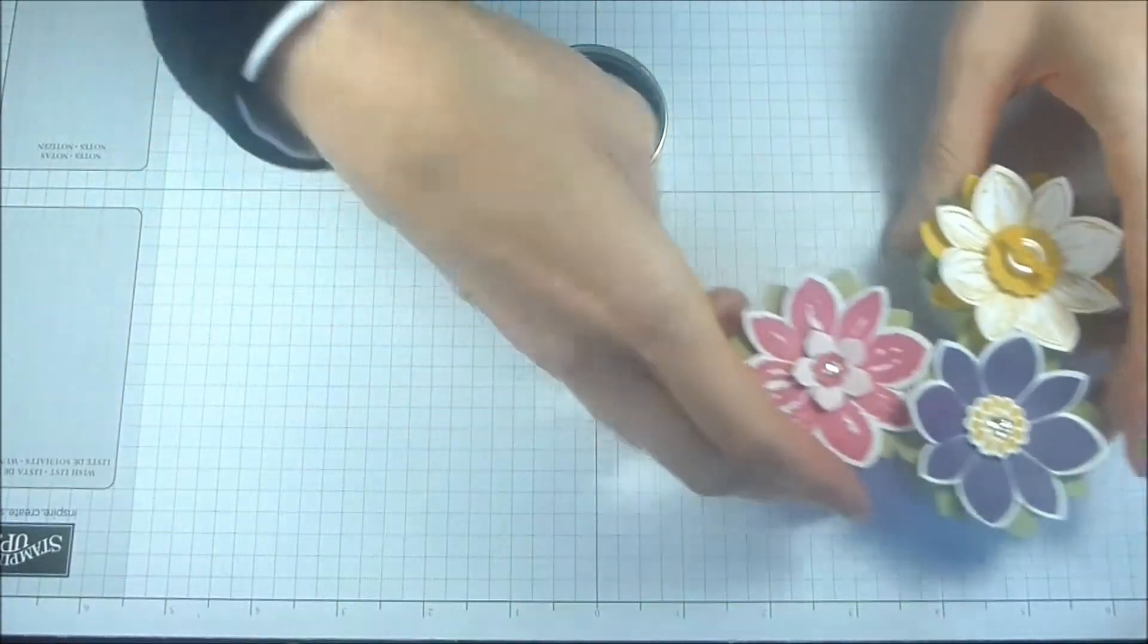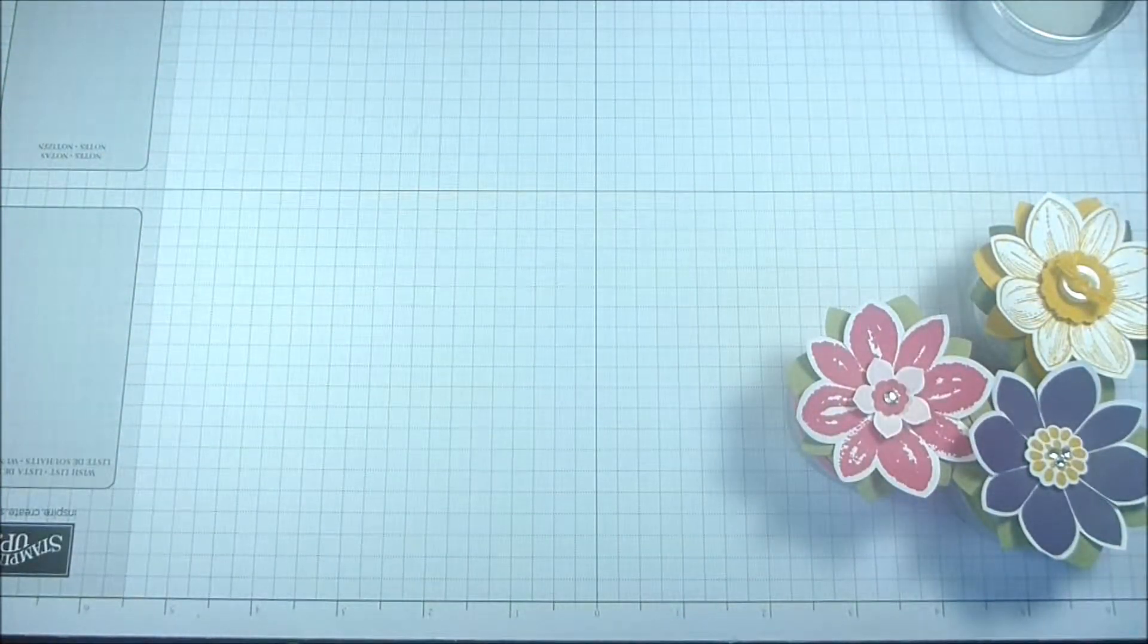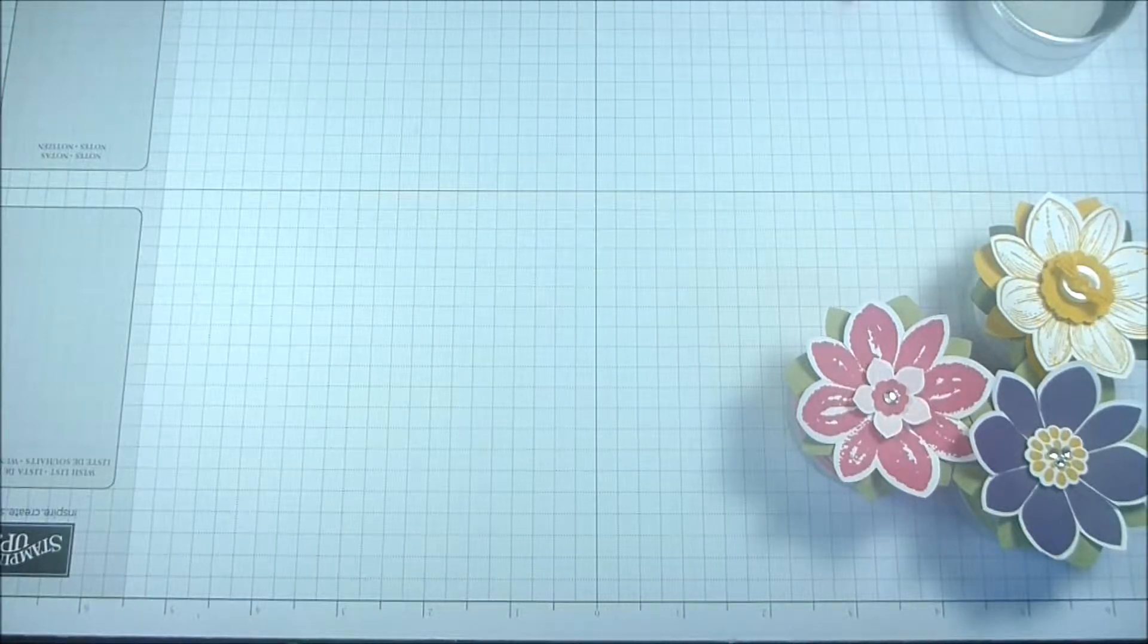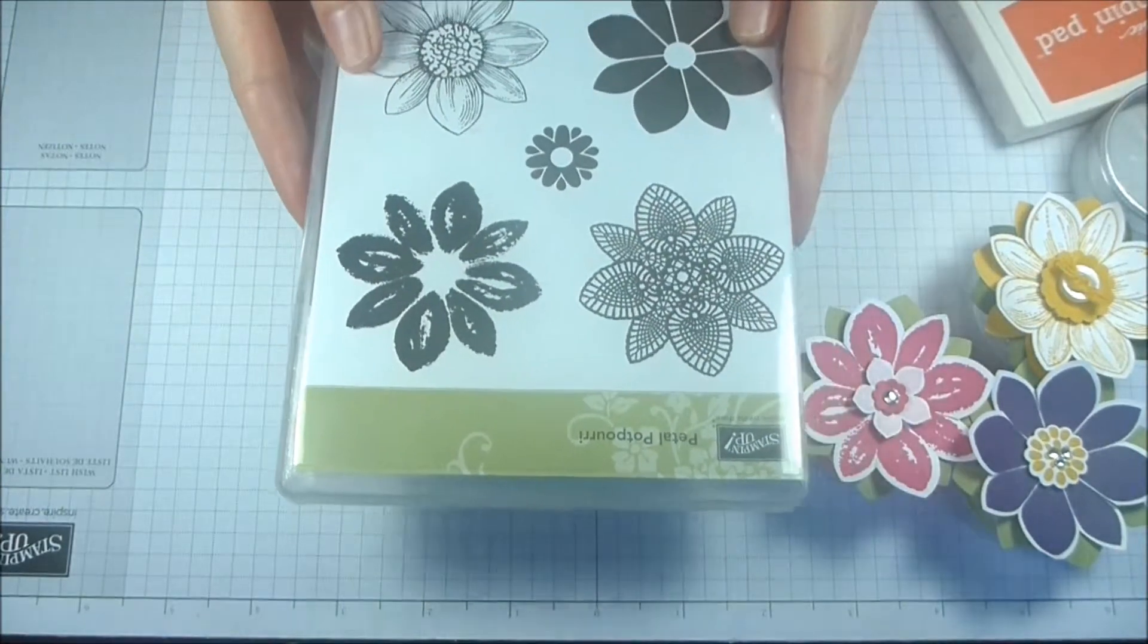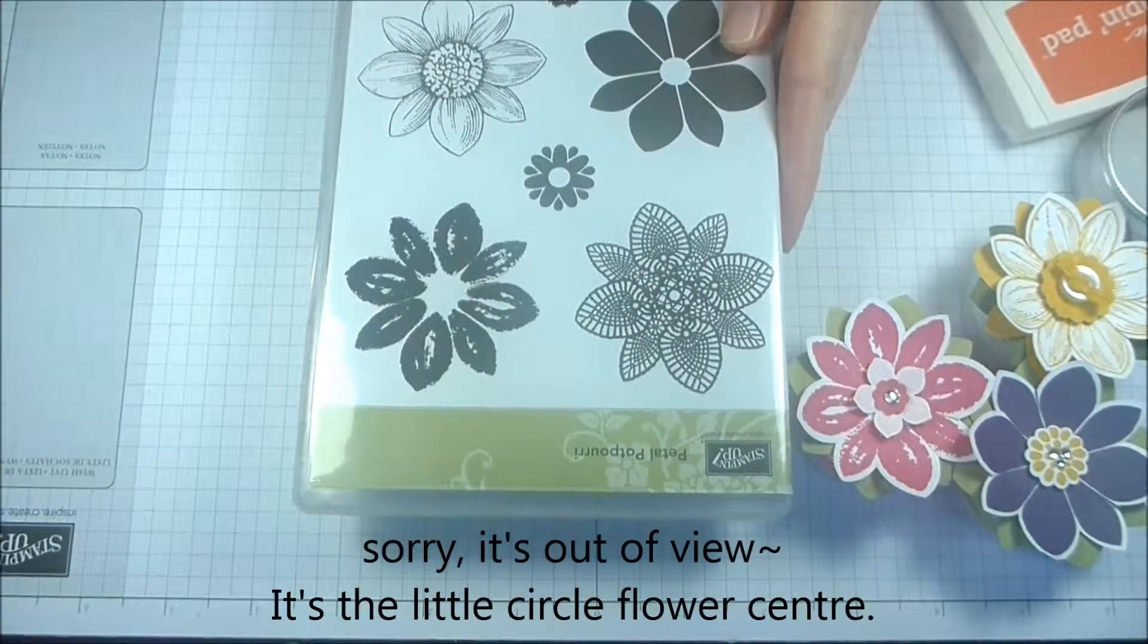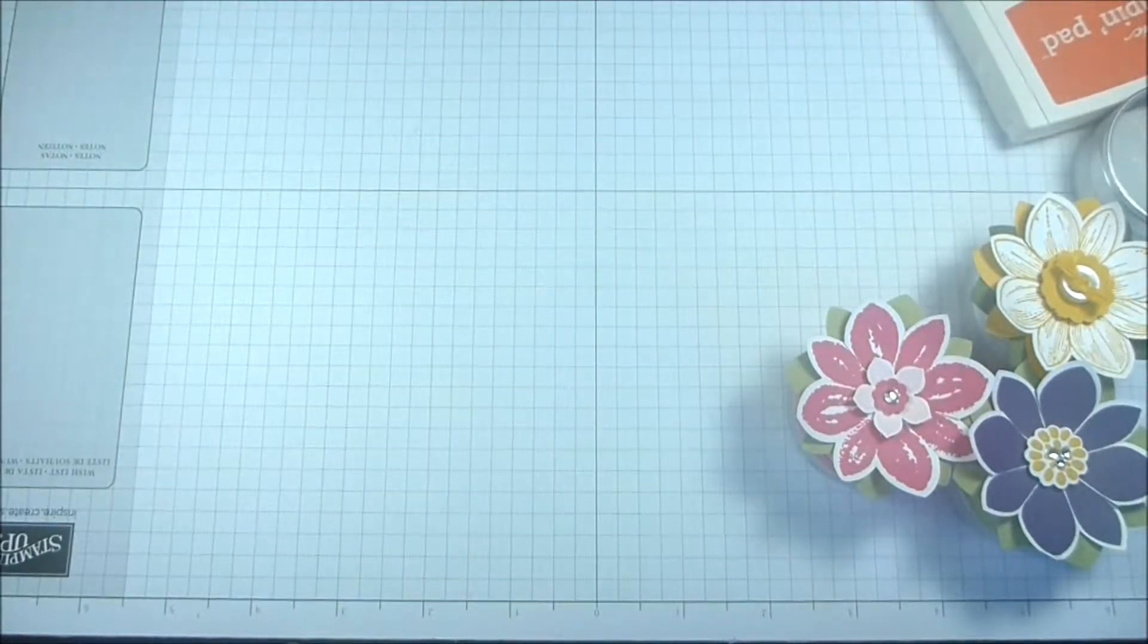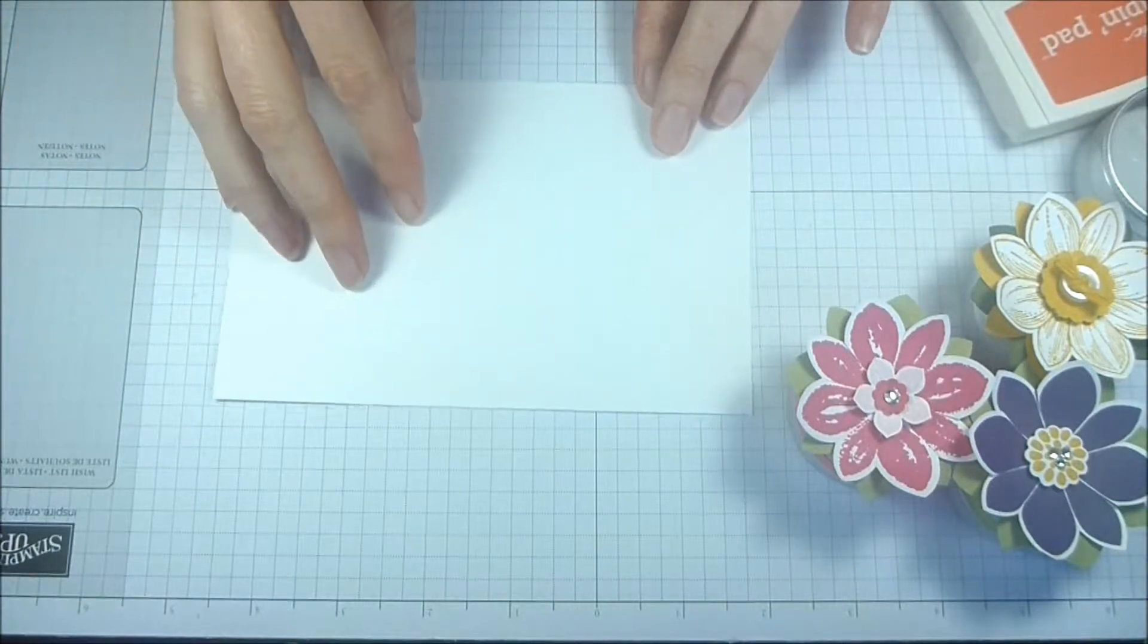So let's get started. Today we're going to be using Crisp Cantaloupe and Calypso Coral for ours, and we're going to be using this from the stamp set Petal Potpourri. I've chosen this one and this little one right here. You'll need just a scrap piece of white cardstock.